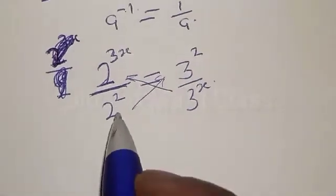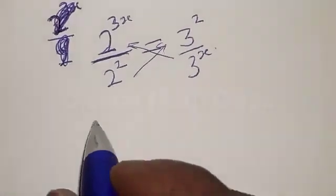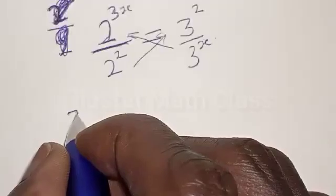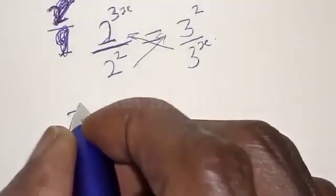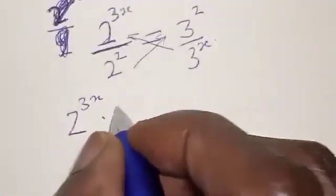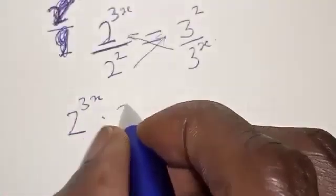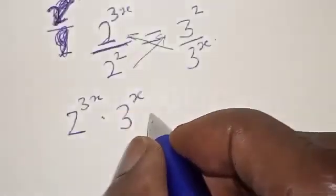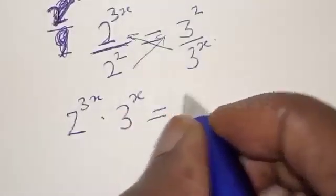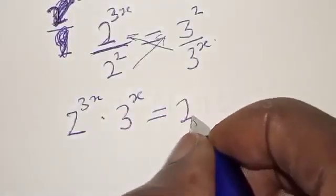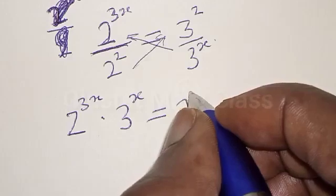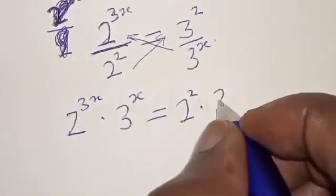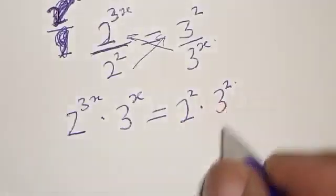Now let's cross multiply. We have 2 raised to power 3x multiplied by 3 raised to power x, equal to 2 raised to power 2 multiplied by 3 squared.